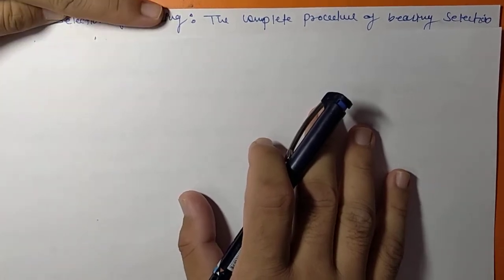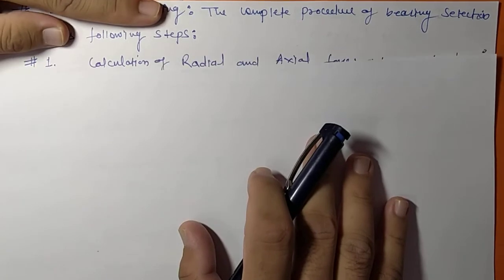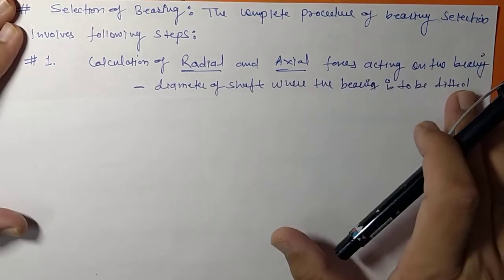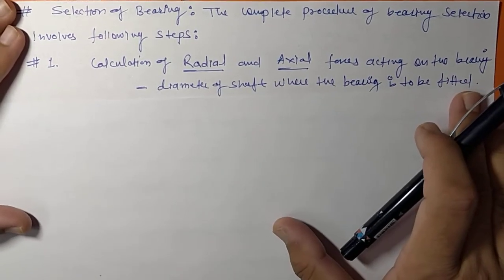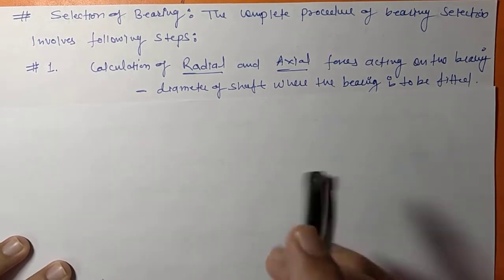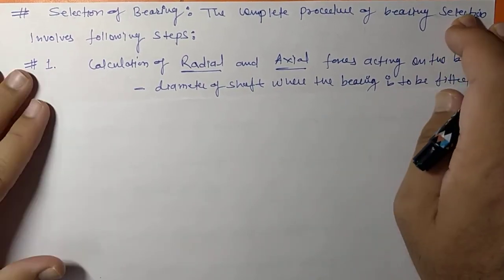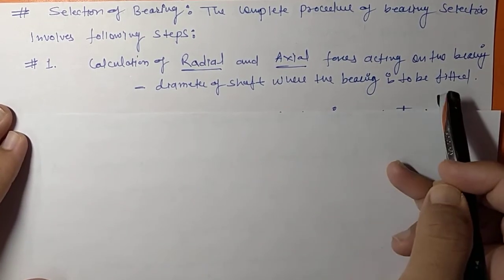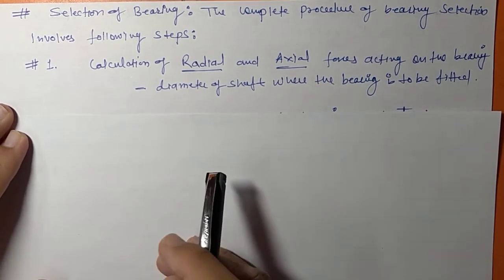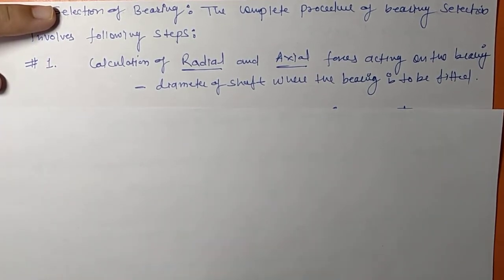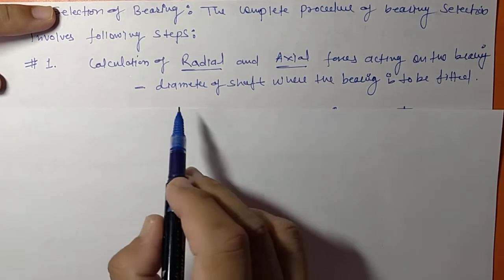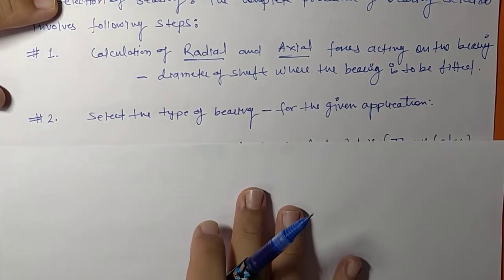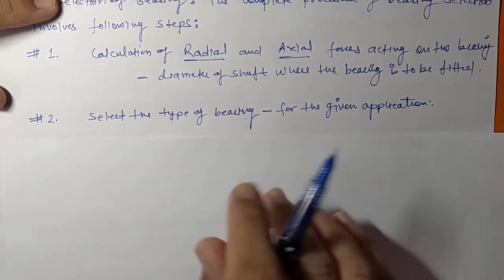The complete procedure involves several steps. The first step is the calculation of radial and axial forces acting on the bearing, and the calculation of the diameter of the shaft where the bearing is to be fitted.